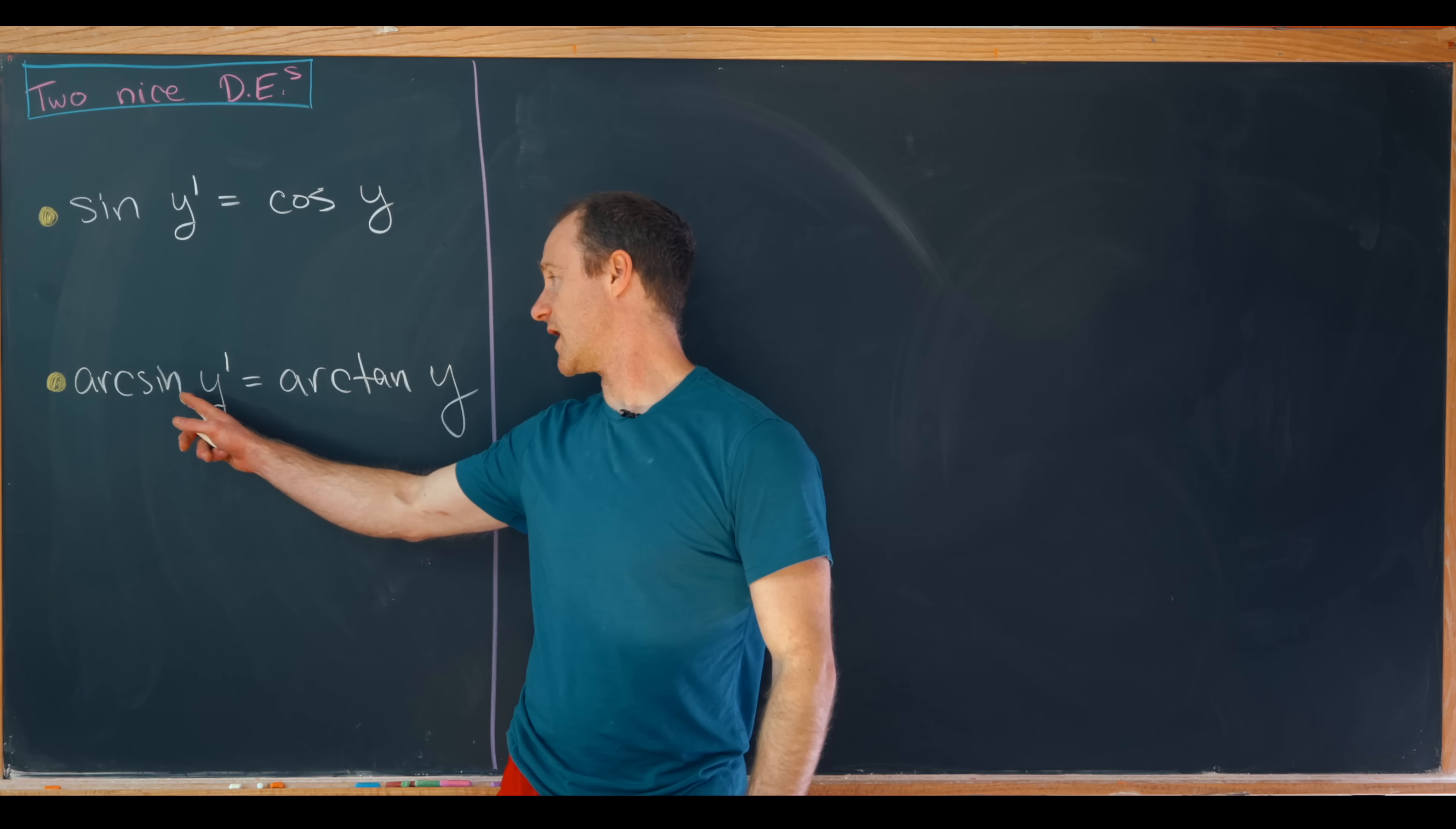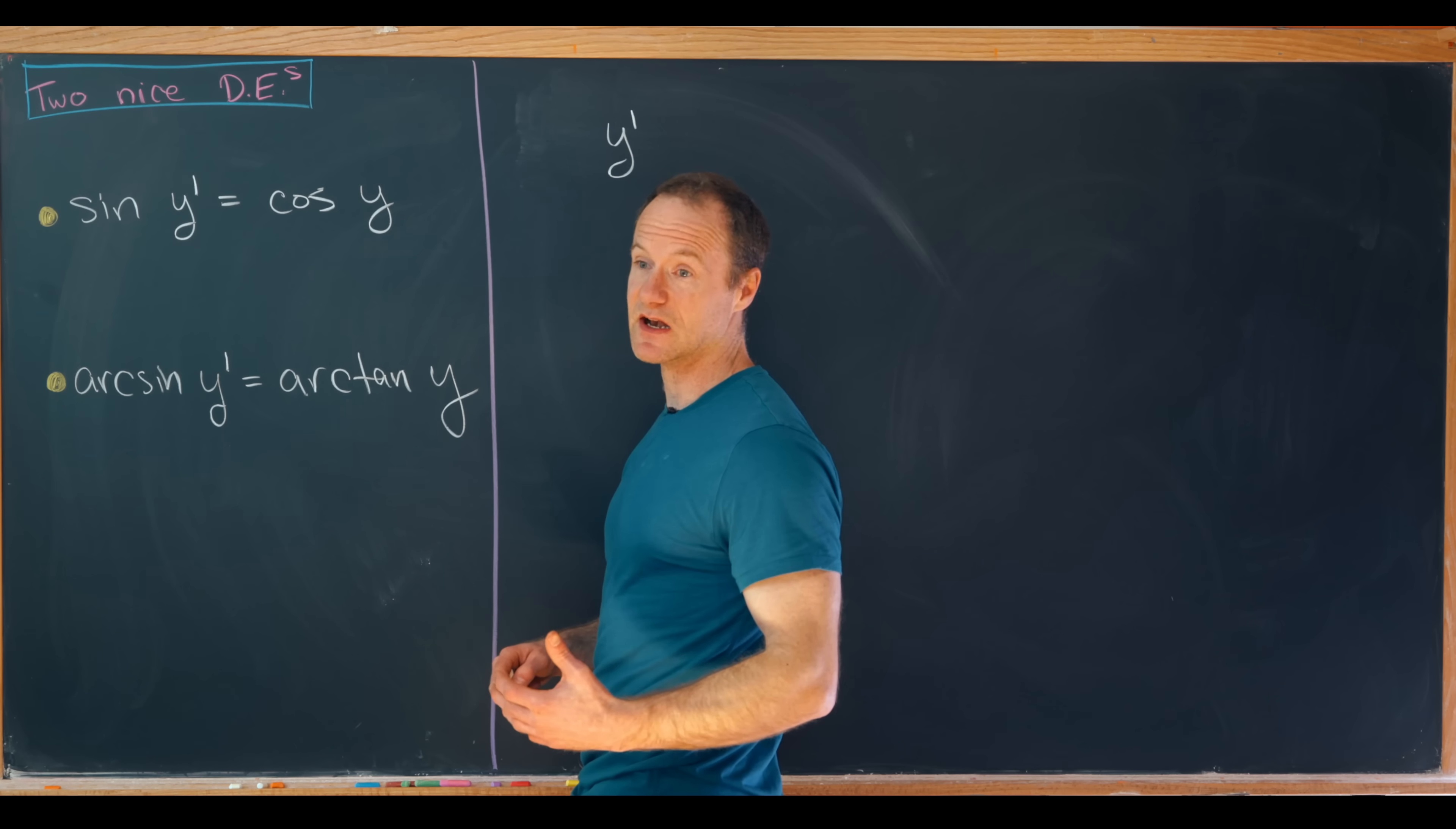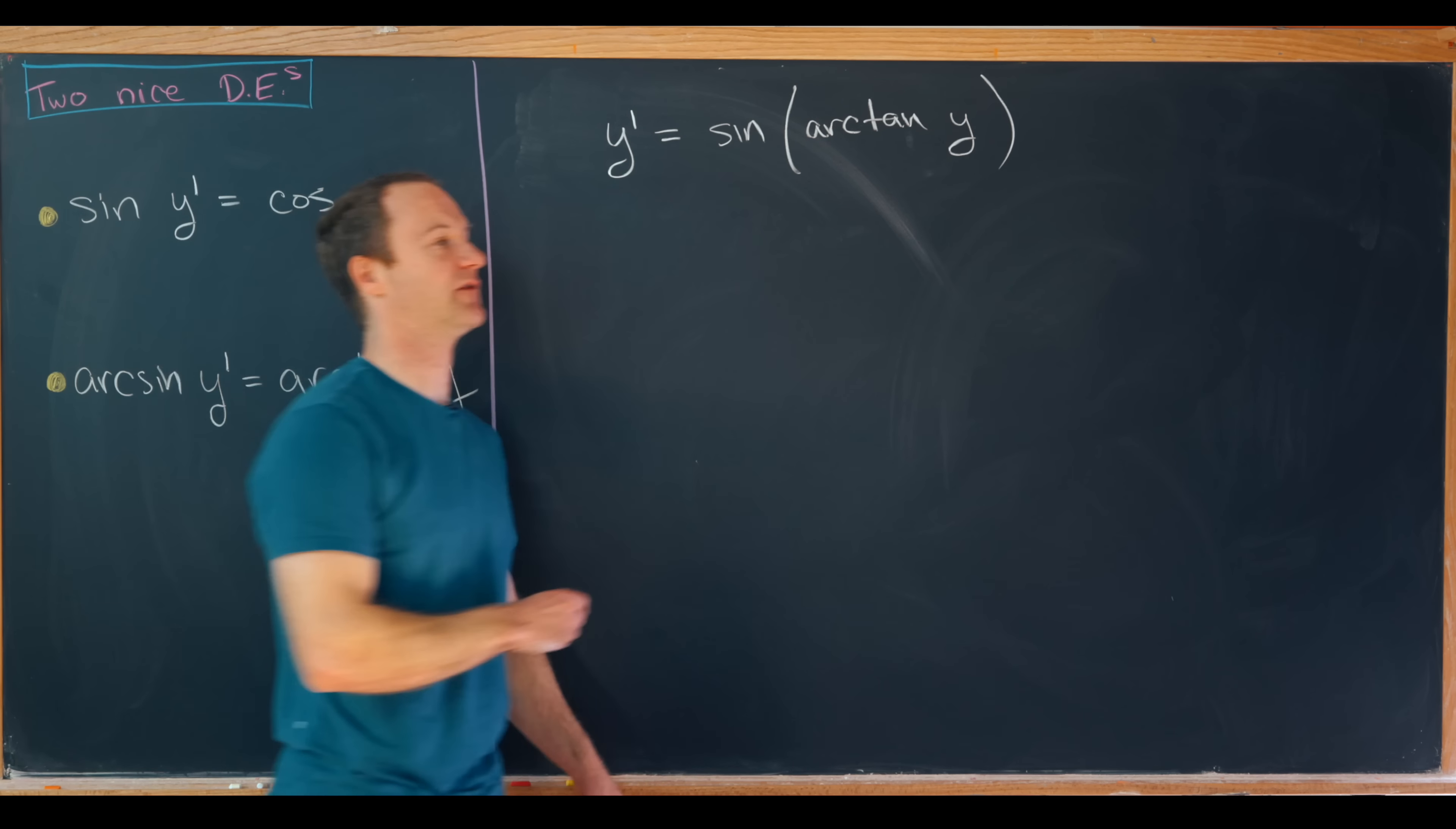I'll start by operating by the sine function on both sides of the equation. Over there on the left hand side that'll just cancel out the sine and the inverse sine by function inverse function relationship. And over here on the right hand side we'll have the sine of the arc tan of y. And now we have to simplify that.